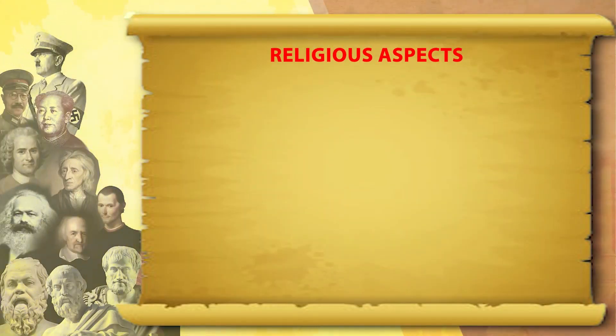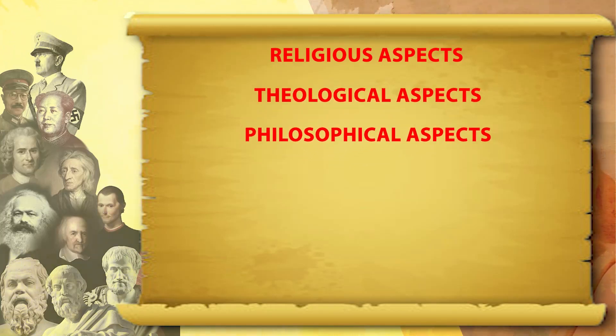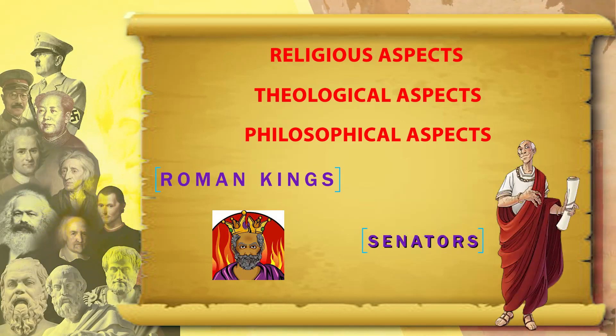Roman emperors followed one of these gods. As already discussed, in Europe, the religious and theological aspects and philosophical aspects were separated. So Roman kings or senators might follow any particular god — Jupiter or Poseidon — but this had very little impact on the functioning of the Senate, the army, the judiciary, and so on. This is a pagan system with little or no interference between the religious beliefs of Roman citizens and those of their leaders.